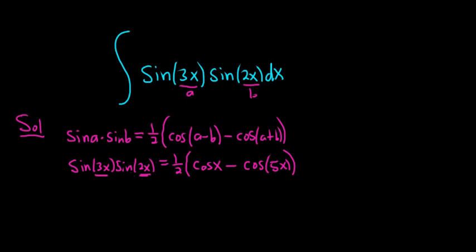So now we can rewrite our integral, and we can pull out the 1 half, because all of this is the same thing as this. So our integral becomes 1 half integral cosine x minus cosine 5x, and then it's dx here.